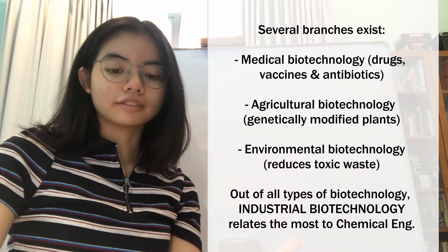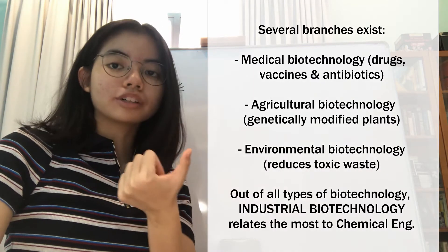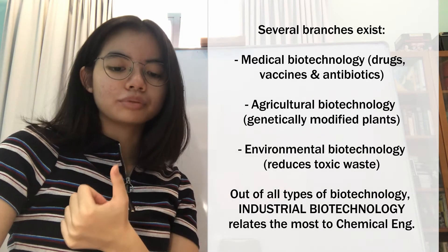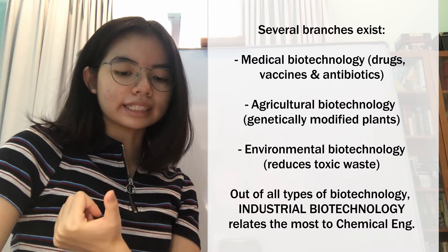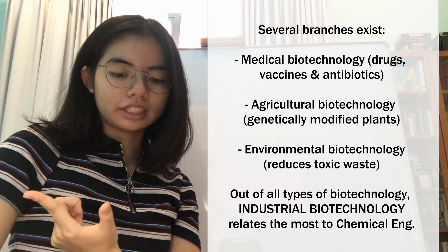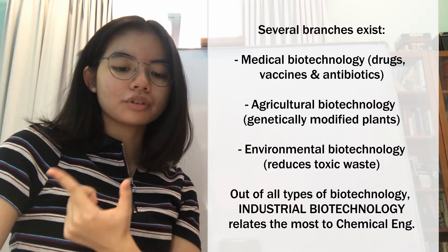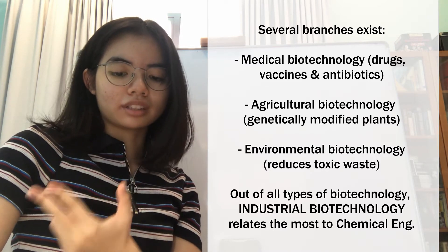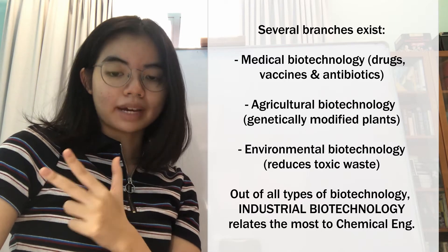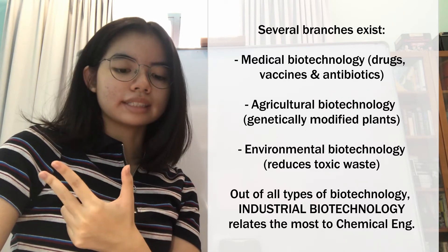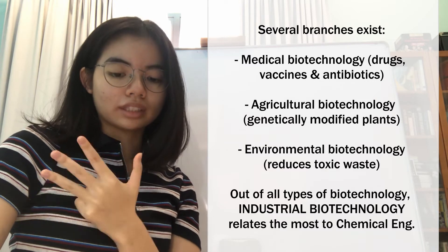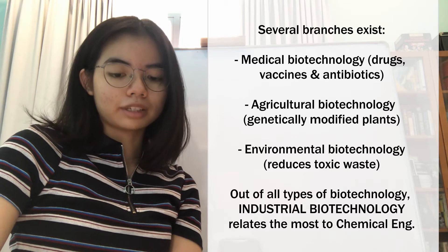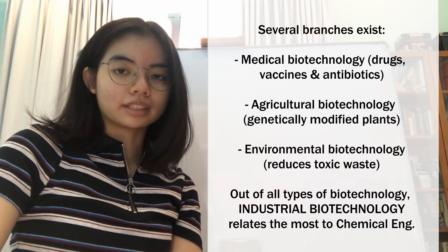There are several branches of biotechnology, such as medical biotechnology, which uses living cell materials to make drugs, engineer genetics, and improve health through vaccines or antibiotics; agricultural biotechnology, which develops genetically modified plants with improved characteristics like being pest resistant; environmental biotechnology, which uses waste-consuming bacteria to reduce toxic waste produced from factories; and finally, industrial biotechnology.